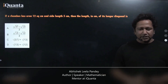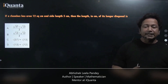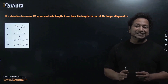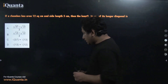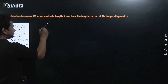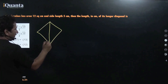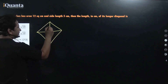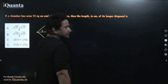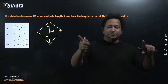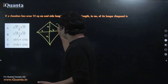The first question says: if a rhombus has area 12 square centimeters and side length 5 centimeters, then find the length in centimeters of its longer diagonal. If I draw a rhombus and assume its diagonals to be 2a and 2b, then the half-diagonals are a and b each, because the diagonals of a rhombus bisect each other at 90 degrees. The side is known to be 5.